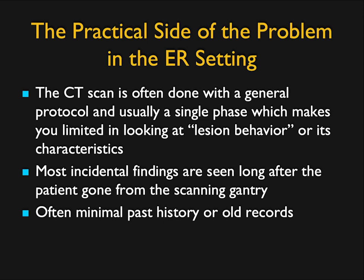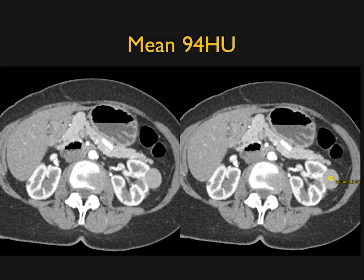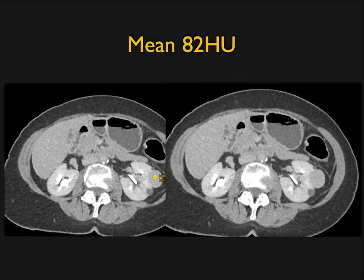One of the most challenging settings for incidental findings is the ER, because you often have no comparison films, minimal history, and variable protocols. For example, if you see a high-density mass in the left kidney measuring 86 Hounsfield units on non-contrast, you know it's a high-density renal cyst — benign, leave alone. But if you only have contrast-enhanced images, that same lesion appears solid. Without the non-contrast phase, you might call it papillary renal cell carcinoma. With multiple phases it's easy; in the ER with limited phases and limited information, it's a real challenge.